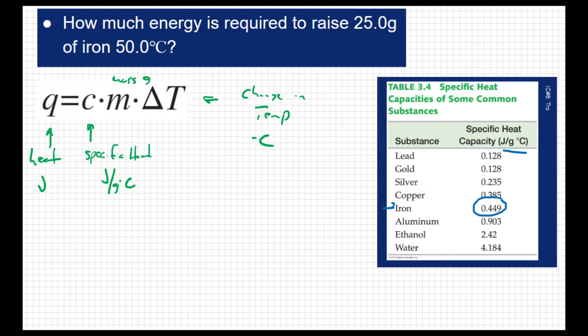So when this question asks us how much energy is required, this question is asking us to solve for Q. And so all we have to do is plug in the other values. So we're going to say Q equals C. So the specific heat we're going to use is that of iron. We've been using 4.184 in our previous problems, but that's water.